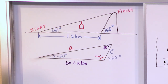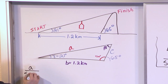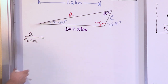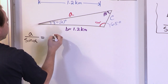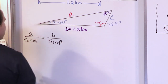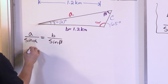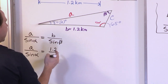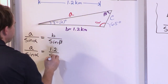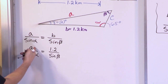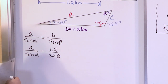Let's go for it and try the law of sines: A over sine of alpha equals B over sine of beta. I don't know A — that's what I'm trying to find. I don't know alpha, B is 1.2, but I don't know beta either. So although I can use the law of sines, I can't make much progress because I'm missing alpha and beta.